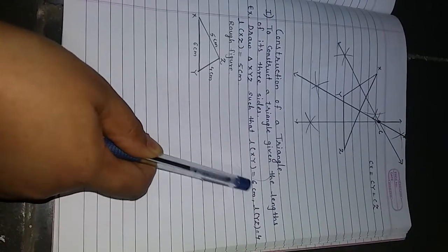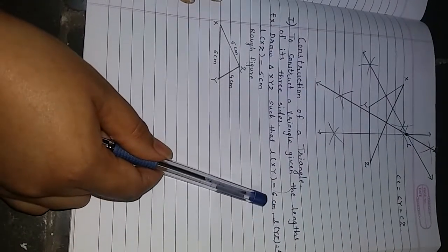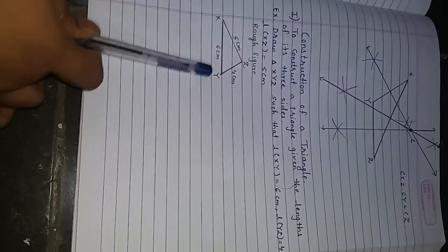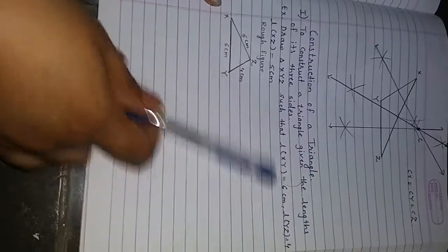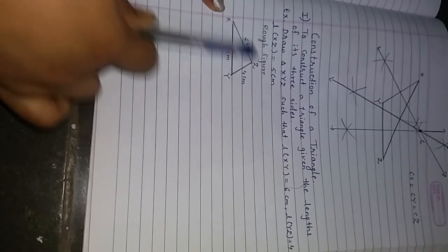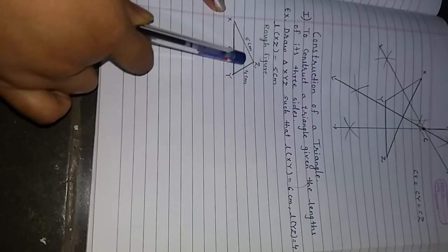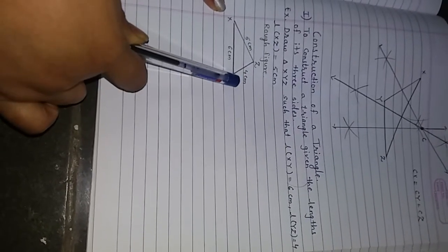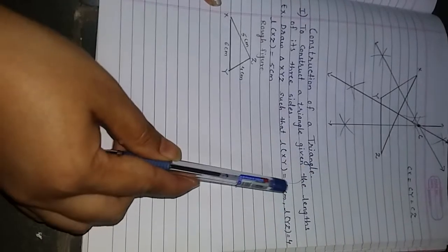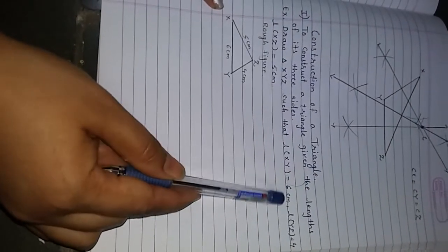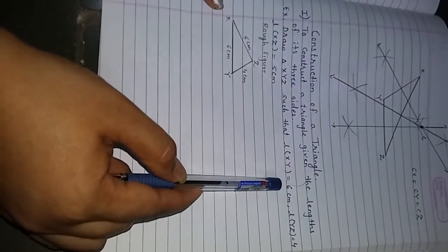This is my rough figure. Taking the bigger length as the base, XY is 6 cm and that is my base. XZ is 5 cm and ZY is 4 cm. Keep in mind: whichever side has the biggest measurement, take that as the base.